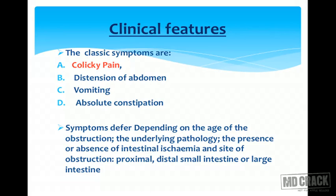The classic clinical features of intestinal obstruction are colicky pain, distension of the abdomen, vomiting, and absolute constipation. Symptoms differ depending on the duration of obstruction, the underlying pathology, the presence or absence of intestinal ischemia, and the site of obstruction — whether proximal or distal small intestine or large intestine.